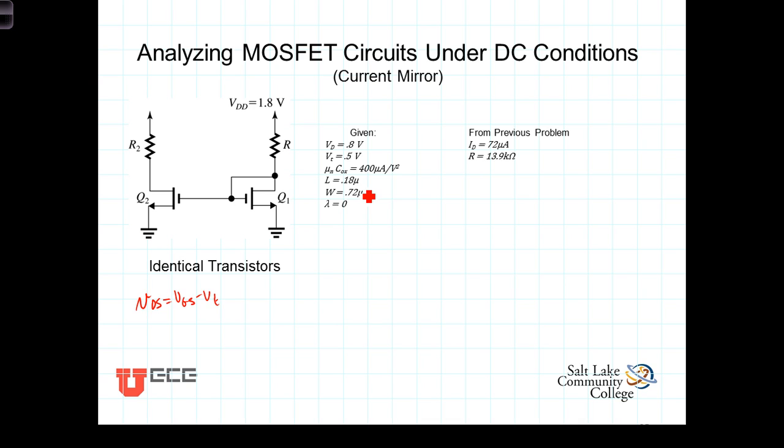We're told that this is the same transistor as our previous one, as the previous example. In that one, we determined that I sub D was 72 microamps and the resistor R was 13.9 kiloohms.